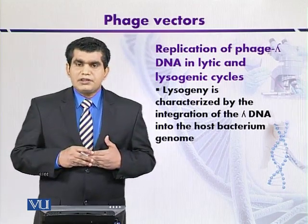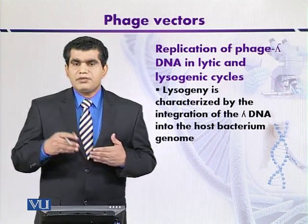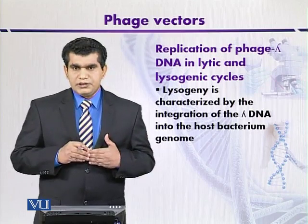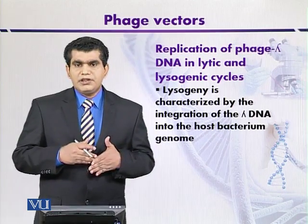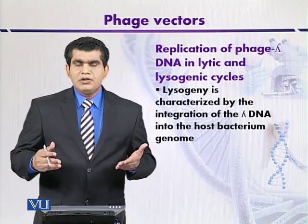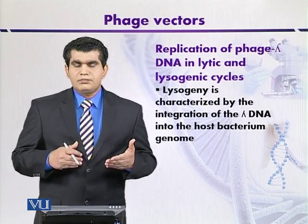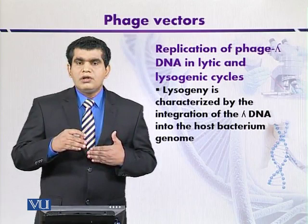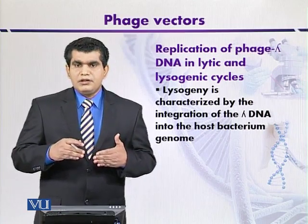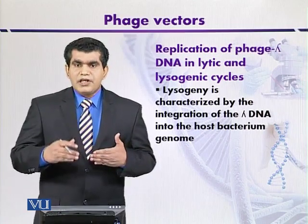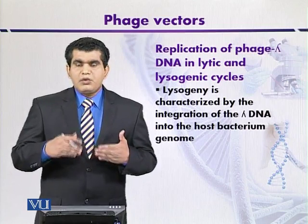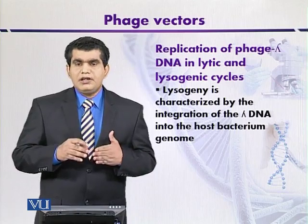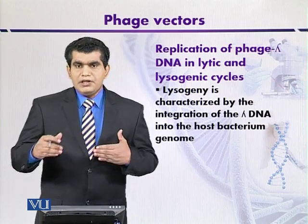In the case of the lytic cycle, the expression of genes can be divided into three temporal stages: early stage, middle stage, and late stage. Once the early stage genes are expressed, the phage cycle enters the lytic cycle, and at the same time, lysogeny will be inhibited.